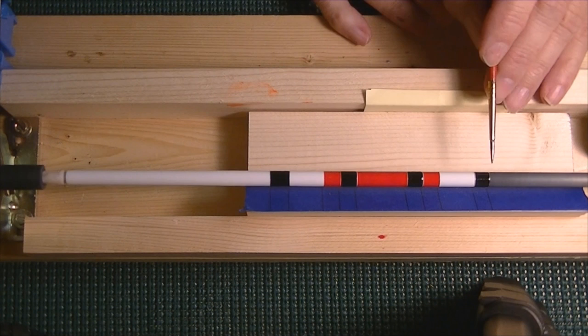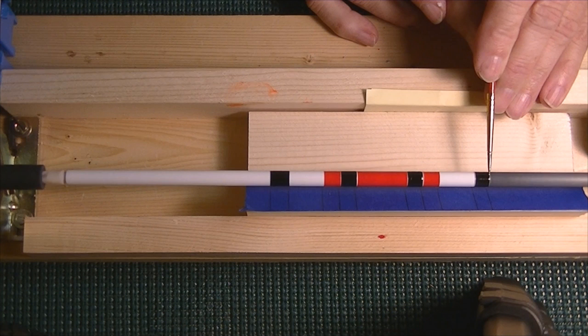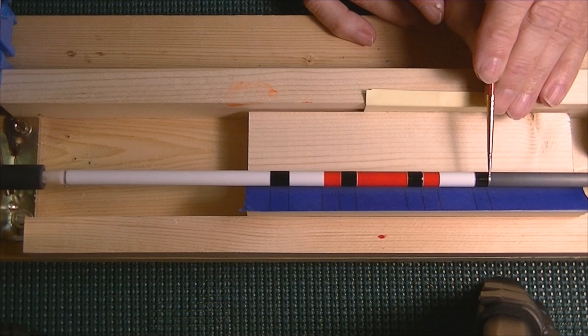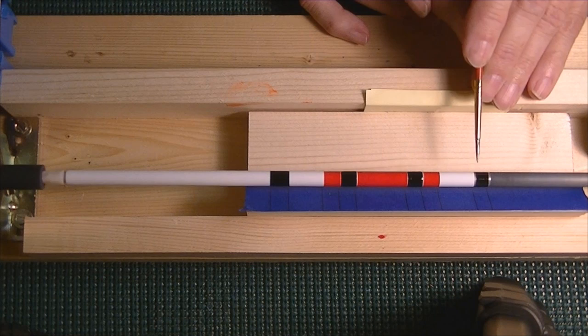The final step is going to be the trim between the colors just to border everything out and kind of dress it up. This is going to be a silver and you can make these as wide or narrow as you want them.